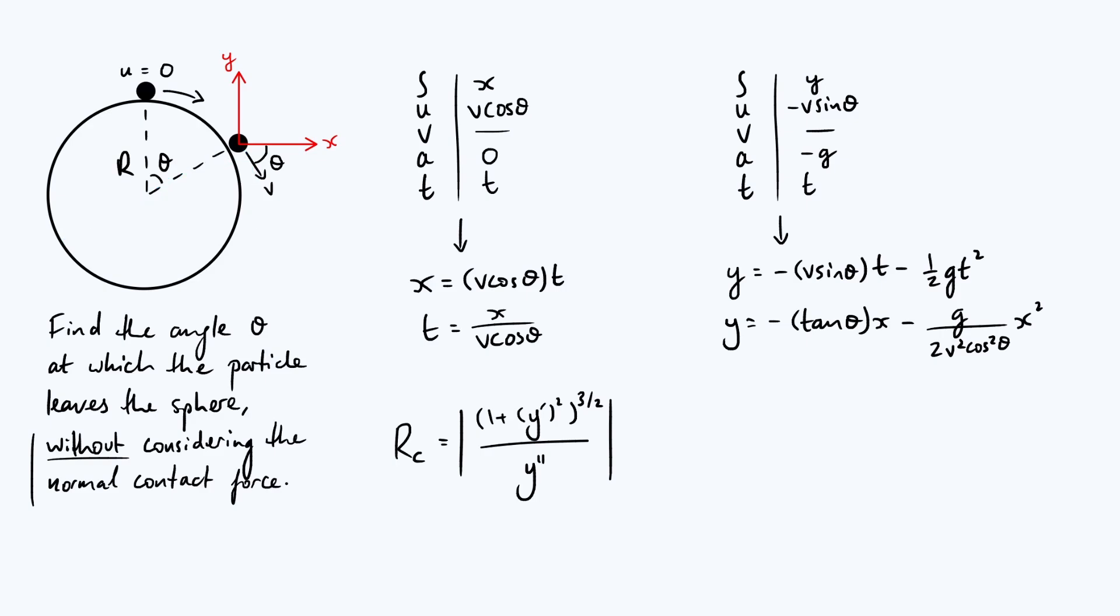In this formula a dash denotes a derivative with respect to x, so the radius of curvature is going to vary along the trajectory. We specifically care about the point where it leaves the surface, so I'm putting x equals 0 down there. To evaluate this we need to differentiate y twice. y dash is minus tan theta because that's a constant. The second term, using the power rule, gives g over v squared cos squared theta times x.